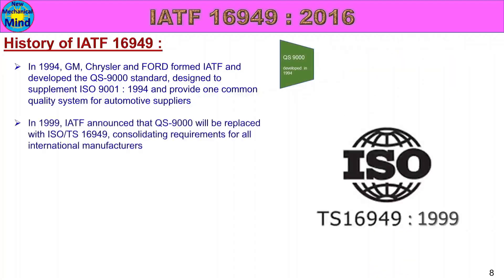In 1999, IATF announced that QS9000 would be replaced with ISO TS 16949, consolidating requirements for all international manufacturers. As more countries and car manufacturers joined IATF, the requirements needed to be included, so in 1999 the ISO TS 16949 standard was first launched, replacing QS9000.